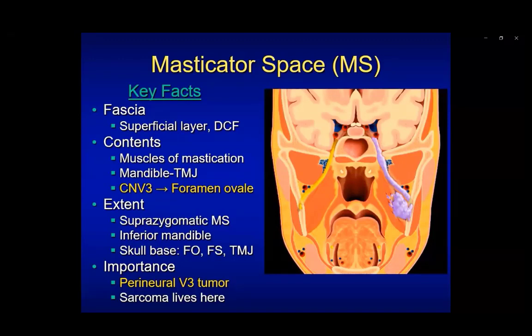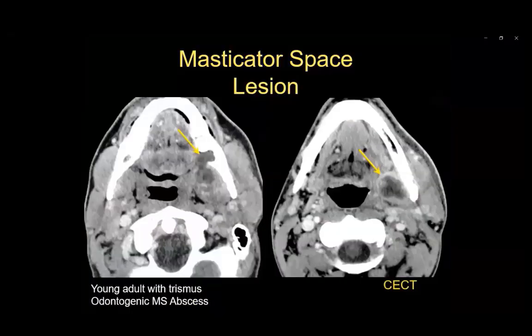A tumor in the masticator space can extend along V3 through the mandibular canal and up through foramen ovale to reach the trigeminal ganglion within Meckel's cave. Perineural tumor spread is quite common, and sarcomas live in this masticator space. Other common lesions are infection — a typical masticator space abscess presentation is a patient from the ED with trismus, showing a classic odontogenic masticator space abscess with a peripherally enhancing fluid collection and a tooth abscess involving the molar teeth, which classically drain into the masticator space.